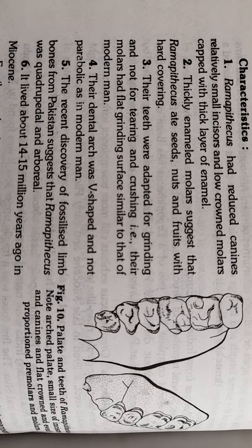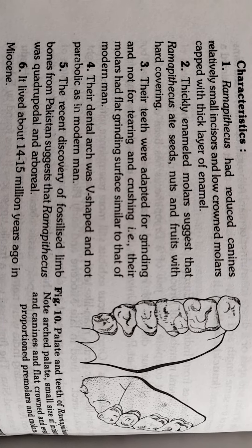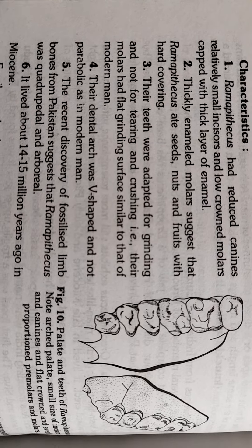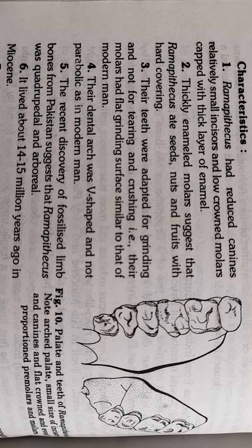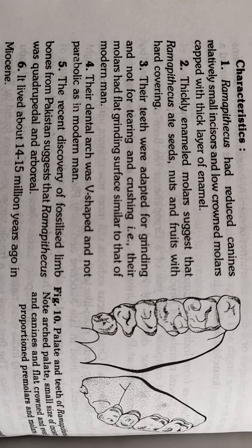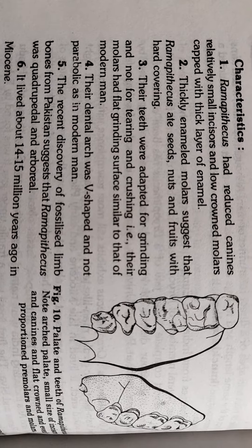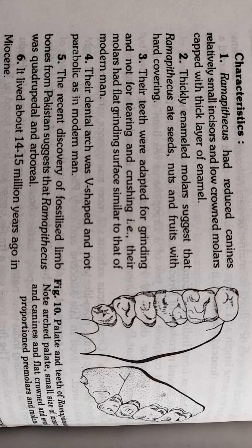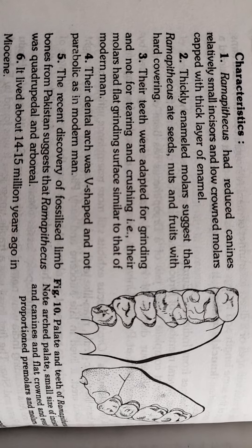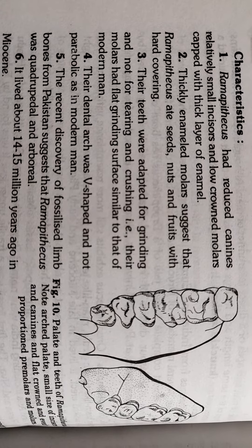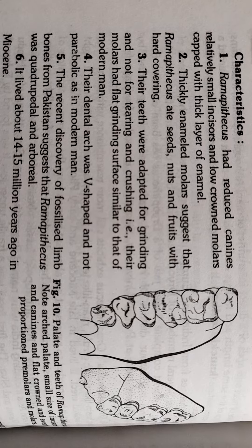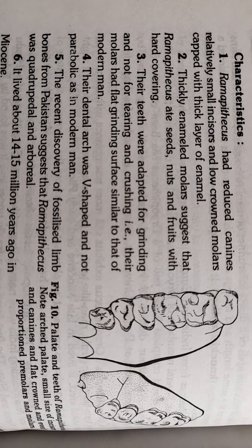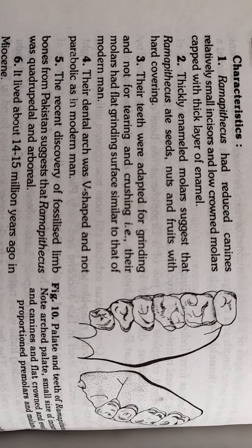It lived about 14 to 15 million years ago in the Miocene period. It is a kind of anthropoid fossil which was present in the Miocene period. These are the characteristics of Ramapithecus, including its palate and teeth structure with small incisors and canines, flat-crowned molars, and a V-shaped dental arch. Thank you.